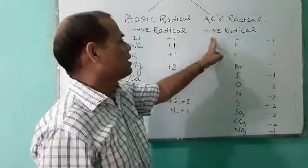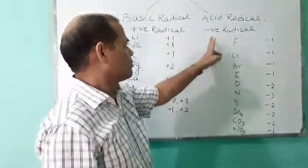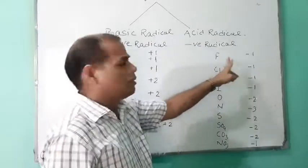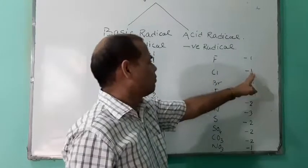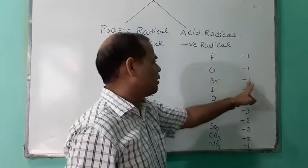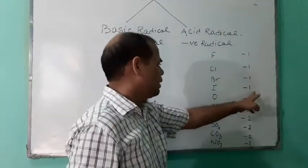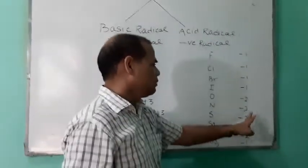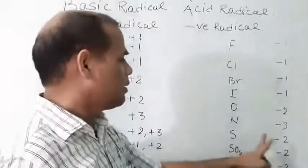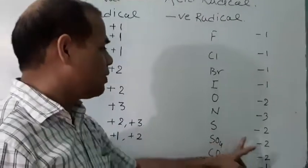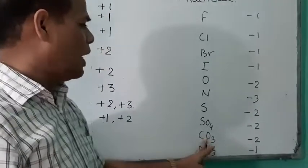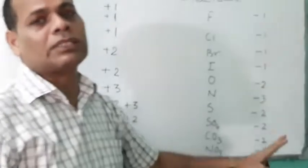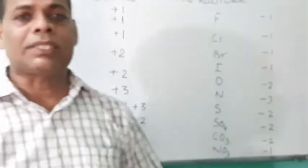Now let us look at negative radicals. Chlorine: minus one. Bromine: minus one. Iodine: minus one. Oxygen: minus two. Nitrogen: minus three. Sulphur: minus two. Sulphate: minus two. Carbonate: minus two. Nitrate: minus one.